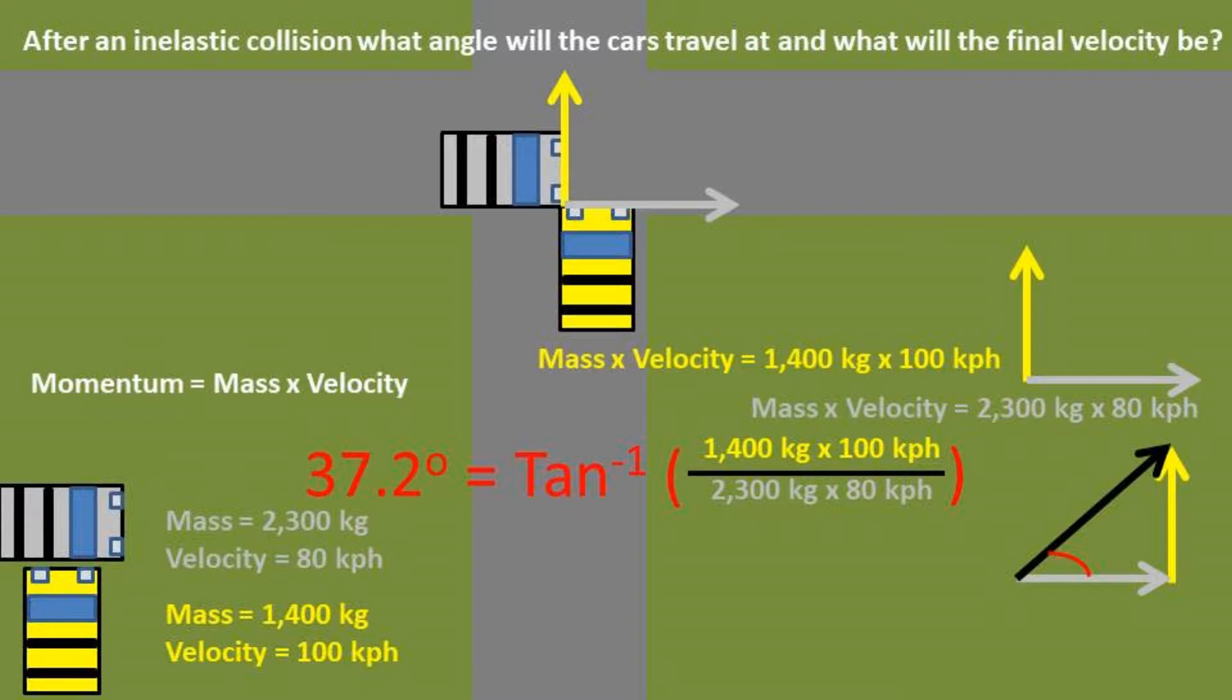If it is unclear why we're doing this, review SOH CAH TOA in trigonometry. Now we can use the Pythagorean Theorem, which is simply A squared plus B squared equals C squared, to find what the black final momentum vector will be.